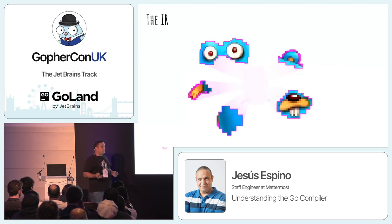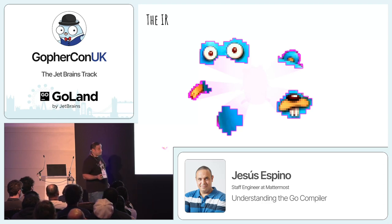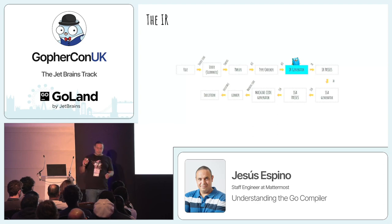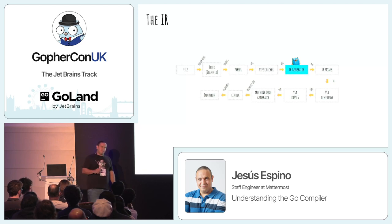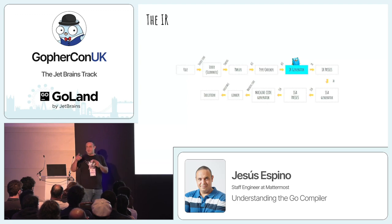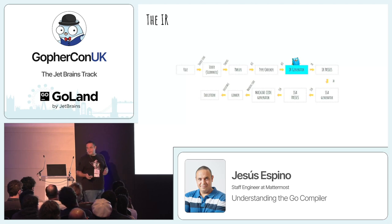Once type checking is done, you start generating the intermediate representation. The AST is one per file; the intermediate representation is one per package. It's generated by navigating the AST and generating all the declarations in the package.